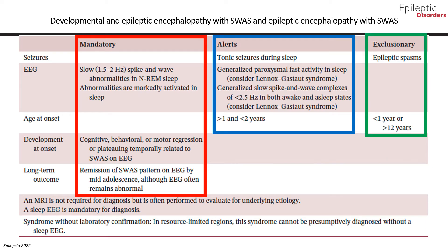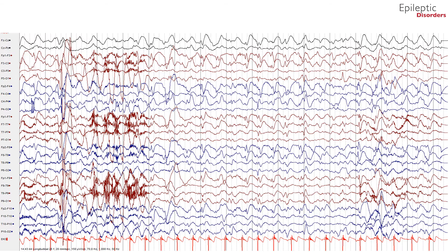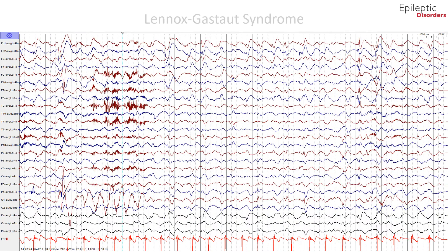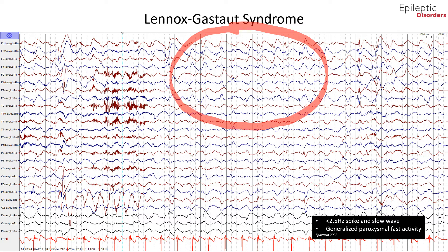Exclusion criteria that should point against this syndrome include seizures consistent with epileptic spasms and an age of onset less than 1 year or greater than 12 years of age. This bipolar montage EEG shows a typical electrographic pattern for Lennox-Gastaut syndrome, which consists of generalized slow spike and wave discharges with spikes followed by a negative high-voltage slow wave. These are bilaterally synchronous with an anterior predominance, occurring at a frequency of less than 2.5 Hz. The spike and slow wave pattern is abundant, often occurring in runs, and may be associated with atypical absence seizures, but often waxes and wanes without any clinical correlate in both wakefulness and sleep. The average montage confirms bilateral frontally dominant spike and slow wave discharges at less than 2.5 Hz, consistent with Lennox-Gastaut syndrome.